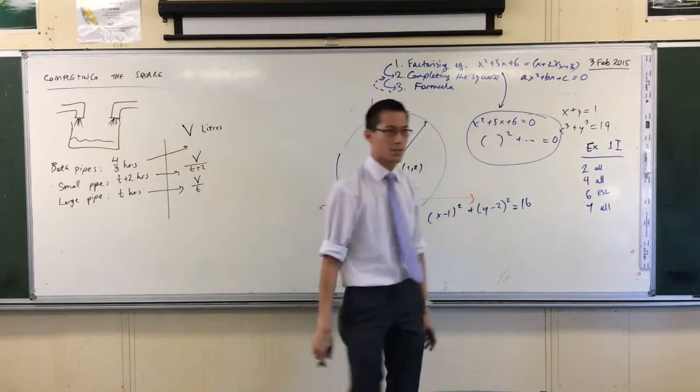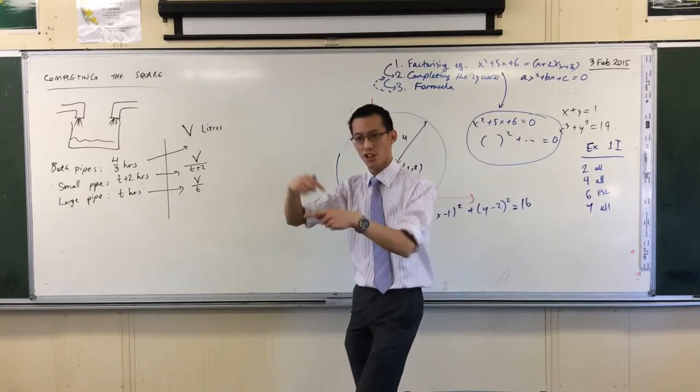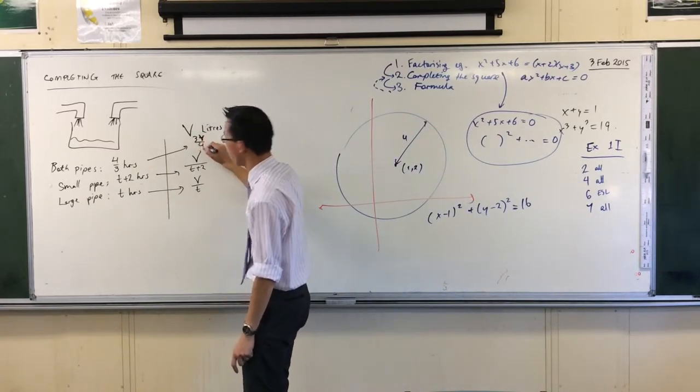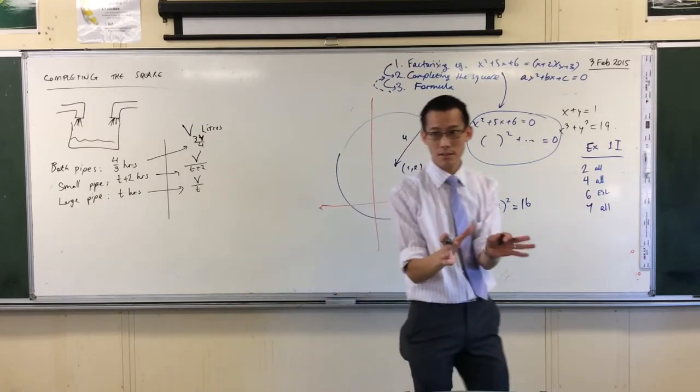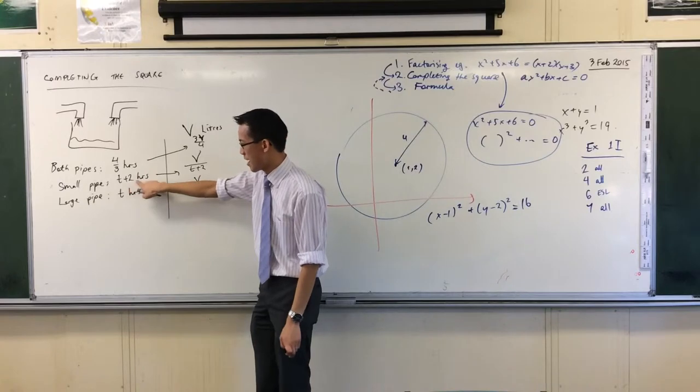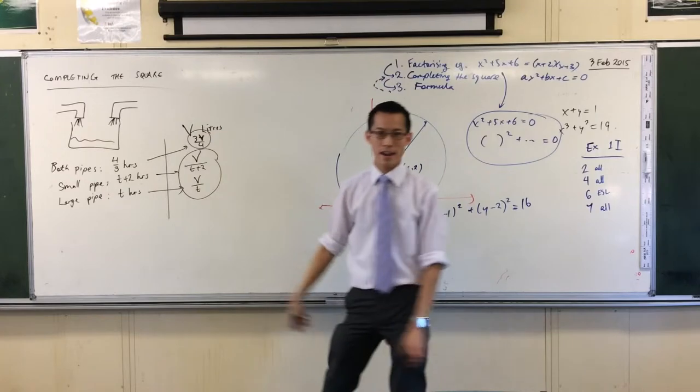How about both pipes? It's going to be V over 4 on 3. That's a fraction on a fraction. I'm just going to flip it over. That's going to be 3V on 4. All right. Large pipe, small pipe, both pipes. These two rates should be equal to this rate when I put them together.